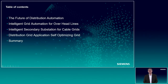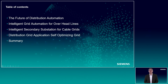Let's start with a table of contents for the session. Today I will speak about the following topics: The Future of Distribution Automation, Intelligent Grid Automation for Overhead Lines, Intelligent Secondary Substation for Cable Grid, Distribution Grid Application, Self-Optimizing Grid, and last but not least, I will summarize.